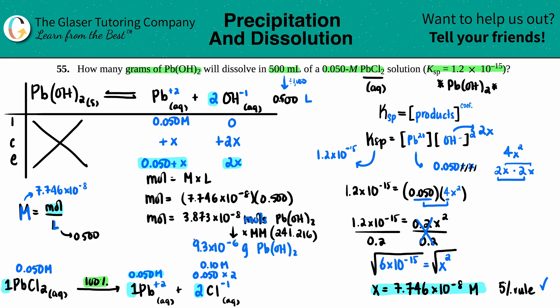So the answer is 9.3 × 10⁻⁶ grams — that's how many grams of Pb(OH)₂ will dissolve. I really hope this helped. Let me know in the comments, subscribe to the channel, keep studying hard, and I'll talk to you later. Bye!